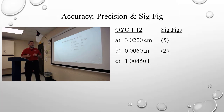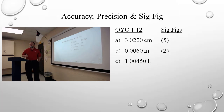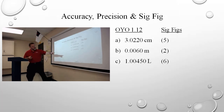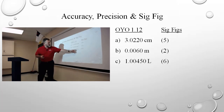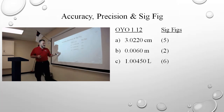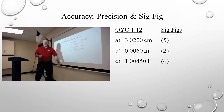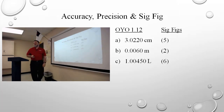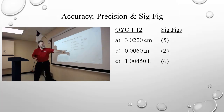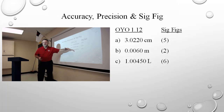How many sig figs? Six, right. You've got three non-zeros, you've got no leading zeros, you've got one trailing zero, and you've got two intermediary zeros. Those two zeros are between significant figures, so they become significant.